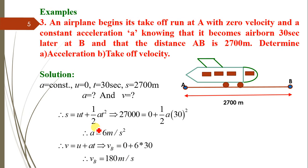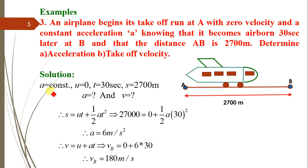Next problem: an airplane begins its takeoff run at point A with zero initial velocity and a constant acceleration. It becomes airborne 30 seconds later at point B, and the distance AB is 2700 meters. Determine the acceleration and takeoff velocity. Given: u = 0, t = 30 s, s = 2700 m.